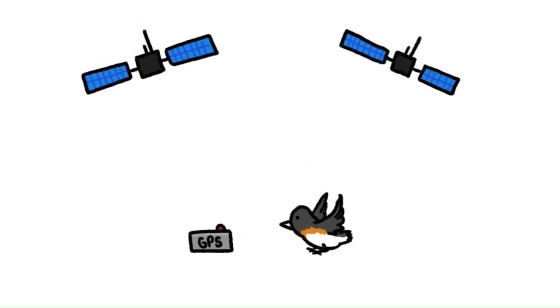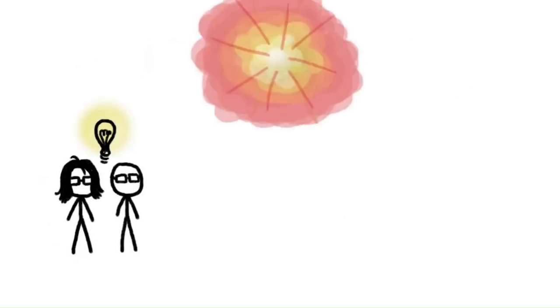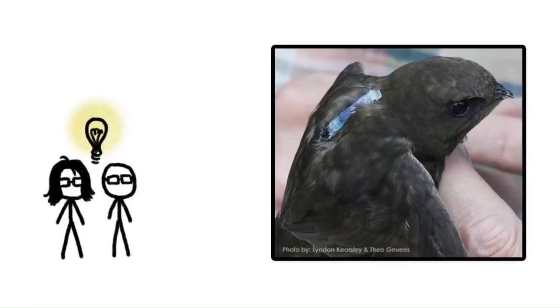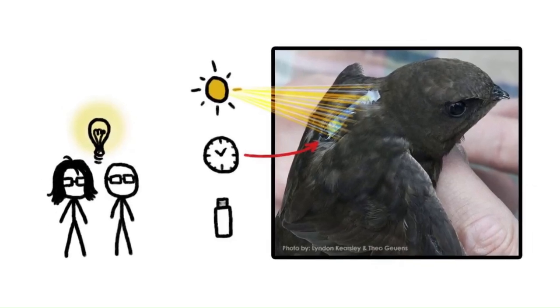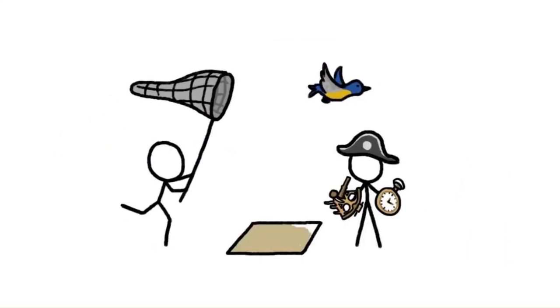But there's a serious limitation to satellite tracking devices. Even with modern technology, transmitters with enough oomph to send signals to satellites are still far too heavy for small songbirds. A slight improvement is to use GPS recorders, which can be smaller because they receive rather than send signals to satellites, but they're still too heavy for the smallest birds.